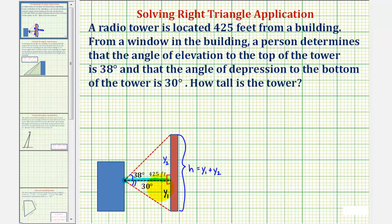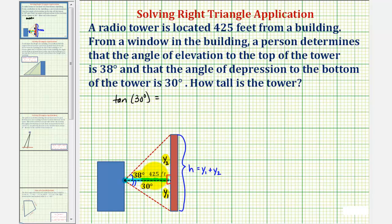Looking at the lower right triangle, notice how if we know this angle, y sub one would be the opposite side, and the adjacent side is 425 feet. Because we'll be using this angle and the opposite and adjacent sides, we should recognize we'll be using the tangent function to determine y sub one. We can see that the tangent of 30 degrees must be equal to the ratio of the opposite side to the adjacent side, or y sub one divided by 425 feet.